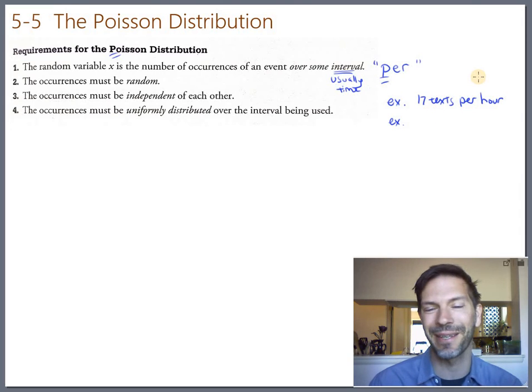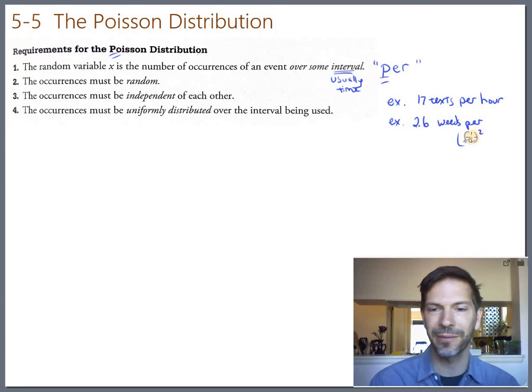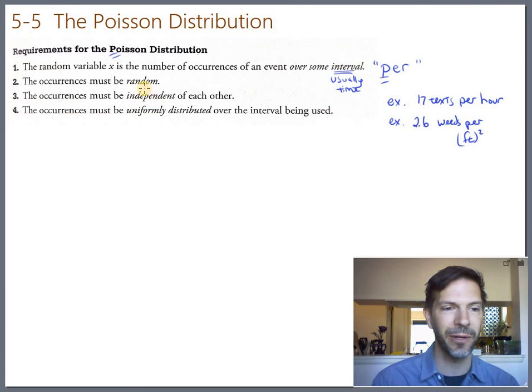It doesn't have to be. Per hour, per day, per minute, per second are pretty typical. You could have an average of 2.6 weeds per square foot in my garden. So there's a per that is an area rather than a time. But those are the sorts of things we're looking at when we're talking about Poisson distribution. That's the main big requirement. The other three are kind of more housekeeping.